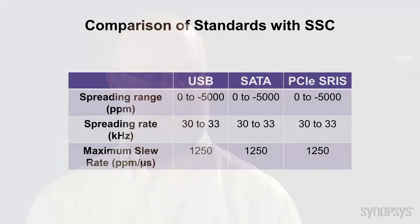So how similar is the SSC in SRIS to what is used in USB or SATA? They're very similar, Rita. If we look at the following table comparing the three standards, we see that the spreading range, the spreading rate, and the maximum slew rate are the same for all three standards. What that means is that all of our previous experience with SSC in SATA and USB directly applies to the PCIe SRIS use model. Thank you, John, for all the information and great insight. This new SRIS capability should allow customers to use PCIe for many new applications.